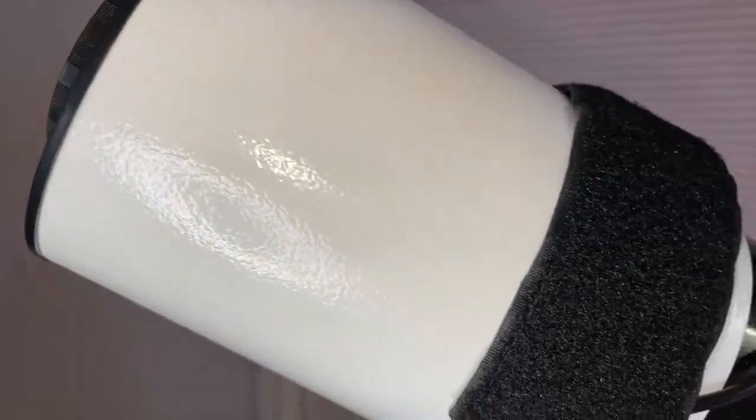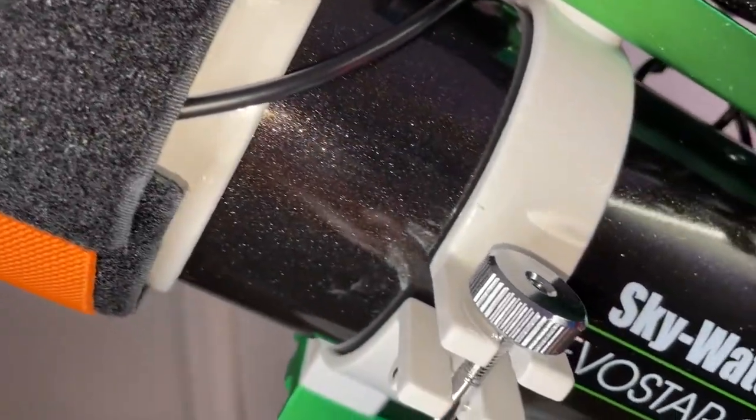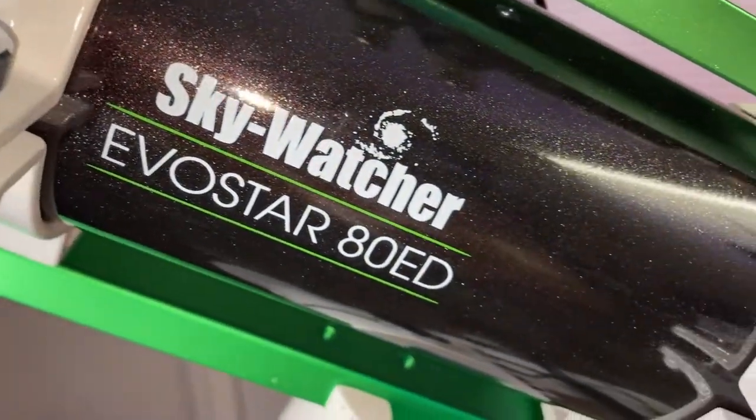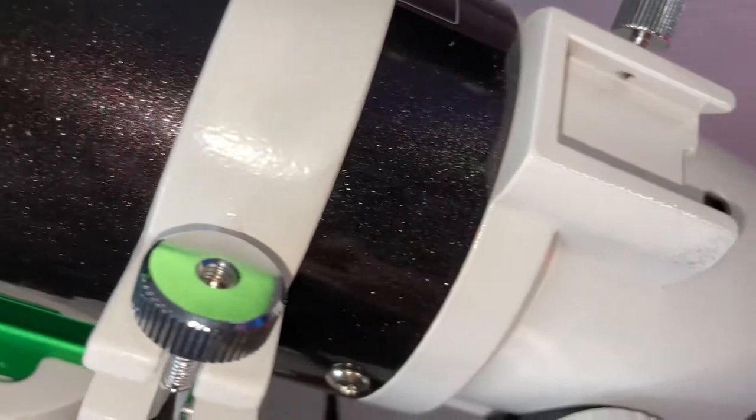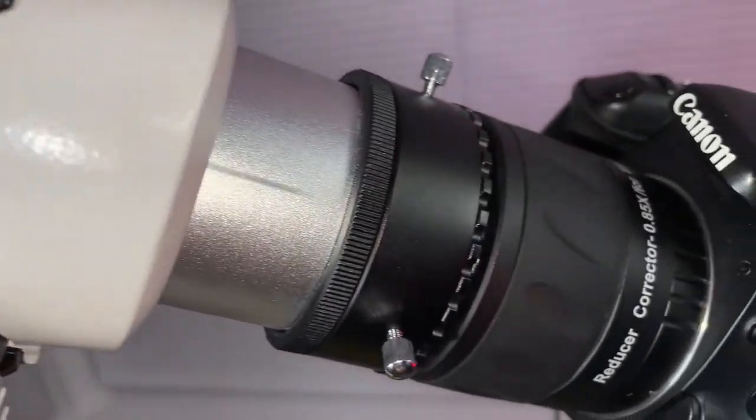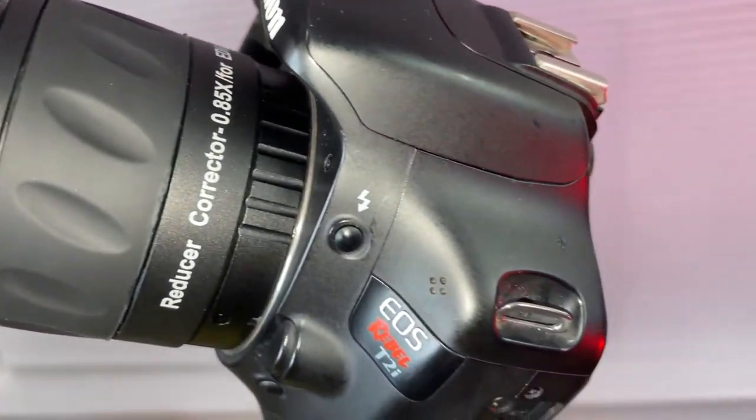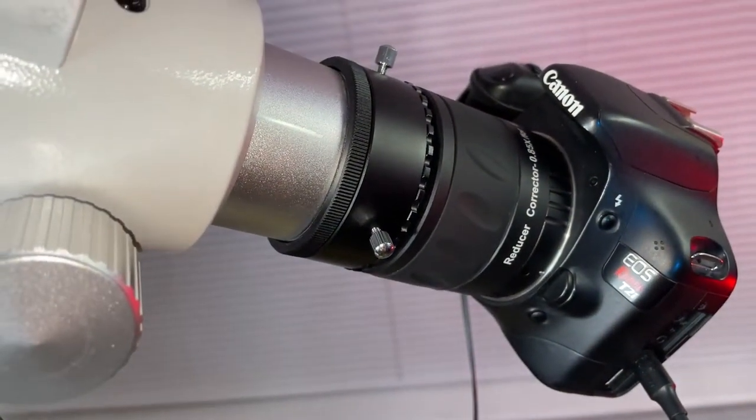Usually for deep sky astrophotography I use my Skywatcher ED telescope that is mounted on HEQ5 Pro mount. There is also a focal reducer corrector from Skywatcher and of course my old DSLR camera, Canon Rebel T2i.